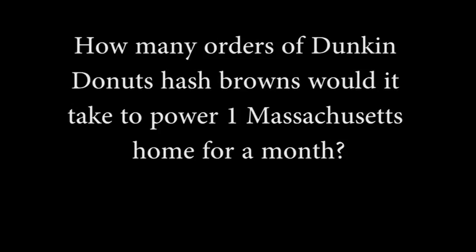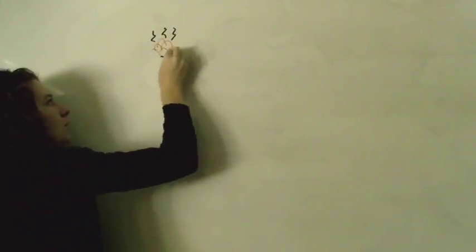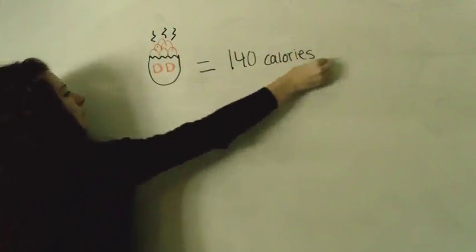I love Dunkin' Donuts hash browns. This video is about how many orders of Dunkin' Donuts hash browns it would take to power a Massachusetts home for one month. According to the Dunkin' Donuts website, one order of hash browns is 140 calories.